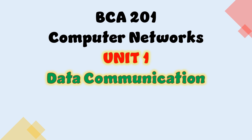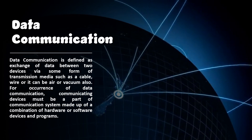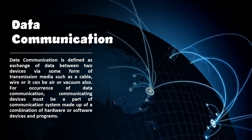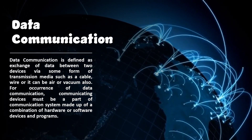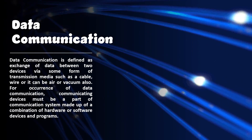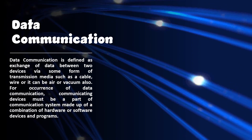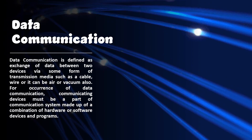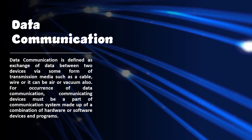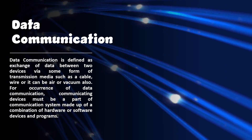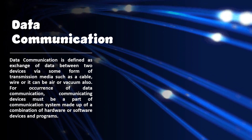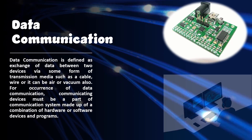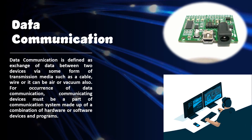Unit 1: Data Communication. Data communication is defined as the exchange of data between two devices via some form of transmission media, such as a cable, wire, or it can be air or vacuum also. For occurrence of data communication, the communicating devices must be a part of a communication system made up of a combination of hardware or software devices and programs.